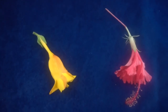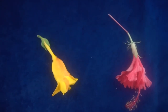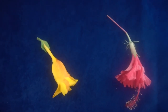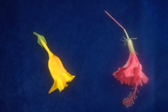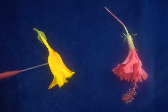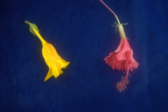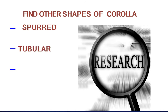These are other kinds of corollas you can make research on. So you know there are different shapes of corollas. I've told you here gamopetalous and polypetalous, and your own research will be on spalled, tubular, and infundibular forms — find the different shapes of corollas.